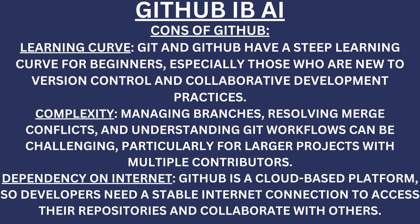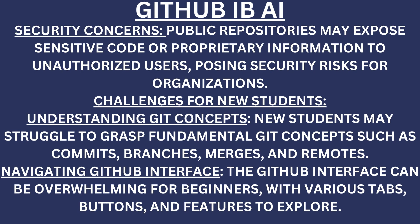Dependency on internet: GitHub is a cloud-based platform, so developers need a stable internet connection to access their repositories and collaborate with others. Security concerns: Public repositories may expose sensitive code or proprietary information to unauthorized users, posing security risks for organizations.